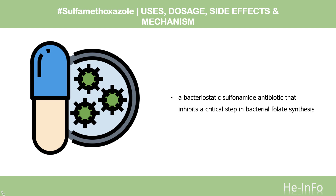Pharmacodynamics: Sulfamethoxazole is a bacteriostatic sulfonamide antibiotic that inhibits a critical step in bacterial folate synthesis. It is generally given in combination with trimethoprim, a dihydrofolate reductase inhibitor, which inhibits the reduction of dihydrofolic acid to tetrahydrofolate. Sulfonamides, including sulfamethoxazole, have been implicated in hypersensitivity reactions; these agents should be discontinued at the first sign of a developing rash, as this may signal the start of a more severe reaction such as Stevens-Johnson syndrome or toxic epidermal necrolysis.